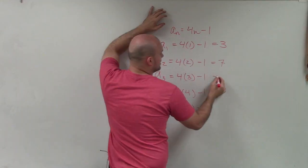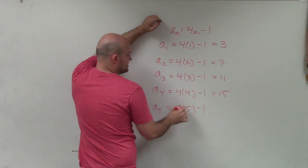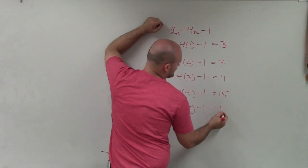4 times 3 is 12, minus 1 is 11. 4 times 4 is 16, minus 1 is 15. 4 times 5 is 20, minus 1 is 19.